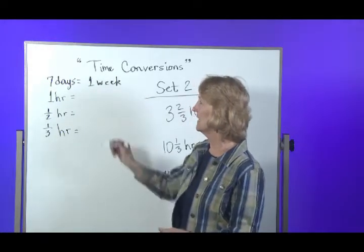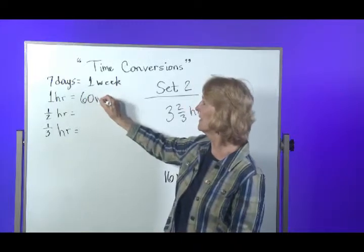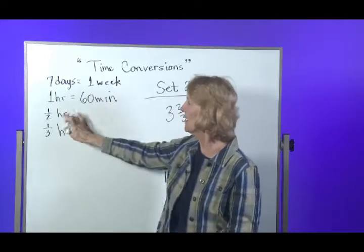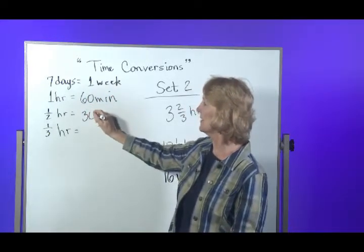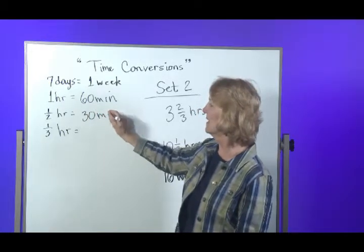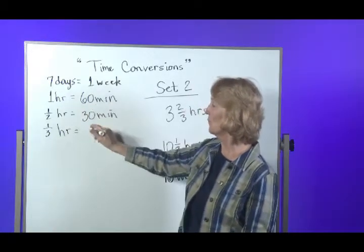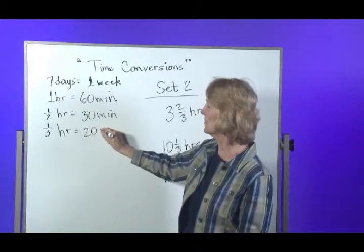An hour is worth 60 minutes, therefore half an hour is worth half of that, so 30 minutes. A third of an hour would be worth a third of 60, so 20 minutes.